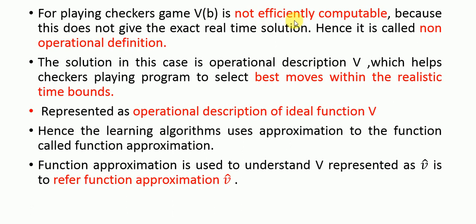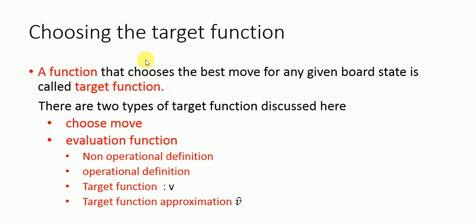The problem was that V(B) was not efficiently computable and represented a non-operational definition. The solution was the operational description V, which gives moves within realistic time bounds and is represented as the operational description of ideal function V. Hence the learning algorithm uses approximation to the function, called function approximation, moving from ideal function V to function approximation represented as V-bar. This is the target function representation: the evaluation function shows what the non-operational definition is, what the operational definition is, and how target function V is changed to target function approximation.